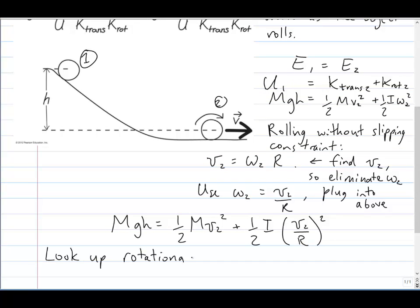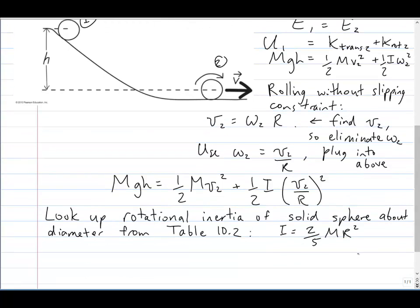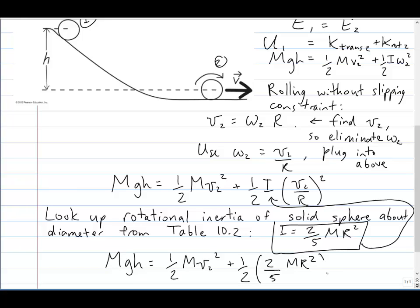Now what's I? Well, let's look up the rotational inertia of a solid sphere rotating about its diameter from table 10.2 in your textbook. It seems to be I equals 2 fifths m r squared. We can plug that up into that equation now.